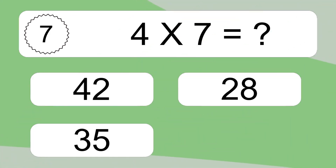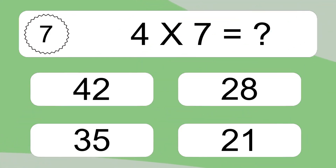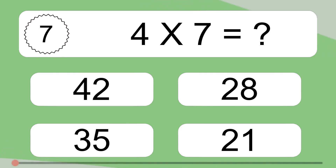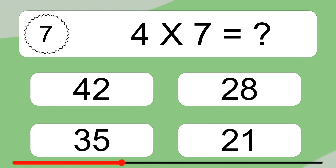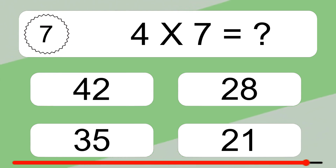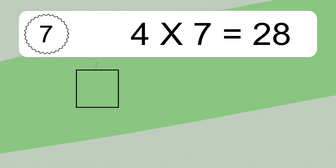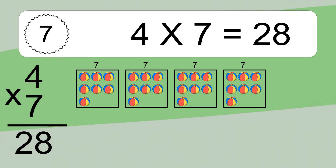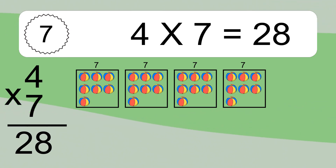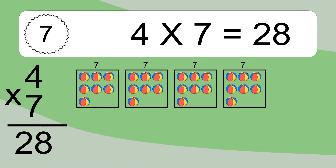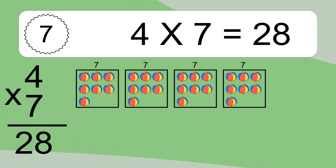4 times 7 equals what? 4 times 7 equals 28. We have 4 boxes, and each box has 7 colorful balls inside. If you count all the balls in all the boxes together, you will have 4 times 7 balls. This equals 28 balls.